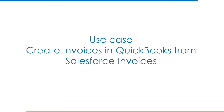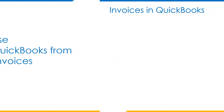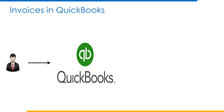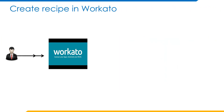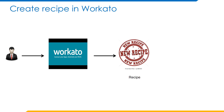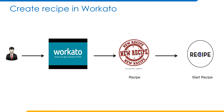Let us take one more use case: creating invoices in QuickBooks from Salesforce invoices. As part of this integration, we need to create invoices in the Salesforce invoice object, and we need to see all the invoices available in QuickBooks related to a customer. We log in to Salesforce and QuickBooks. We created invoice records in Salesforce. Now we log in to Workato to create a recipe to do the Salesforce integration with QuickBooks. After creation of the recipe, we start the recipe to see the results in QuickBooks invoice object related to the customer.